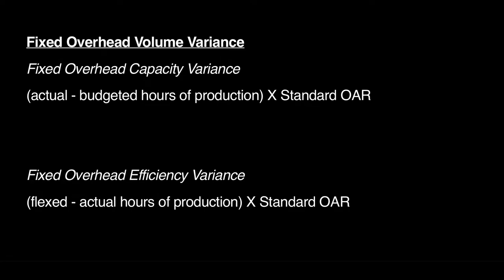For efficiency variance, we compare the flexed hours — which is actual output multiplied by the standard hours per unit — with the actual hours, and multiply the difference by the standard OAR. If the firm used more hours than it should have, that is adverse; if it completed the job in fewer hours, that is favorable.